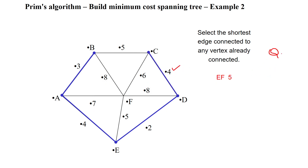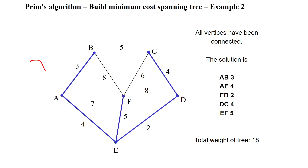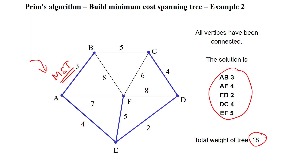For vertex F, we evaluate the minimum cost edges: 8, 7, 5, 8, and 6. The minimum weight edge is 5, between E and F. We select edge E-F, which does not form a cycle. F is removed from the queue. The queue is now empty, so we stop the algorithm. Calculating the total cost of all selected edges, the total cost is 18.